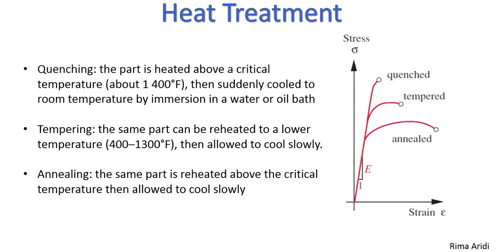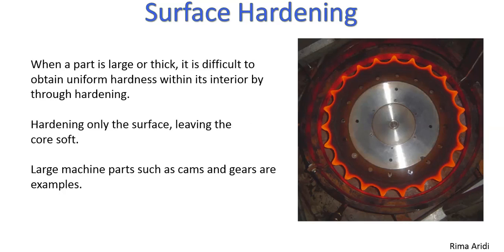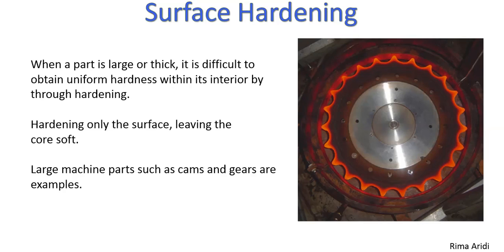Here we have to know very well the difference between brittle and ductile materials. Check my video, brittle versus ductile materials. Some parts are difficult to obtain uniform hardness. So hardening is done only on the surface such as cams, gears, and large machine parts.